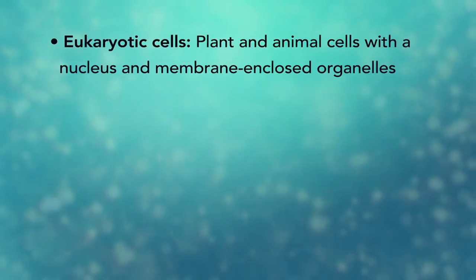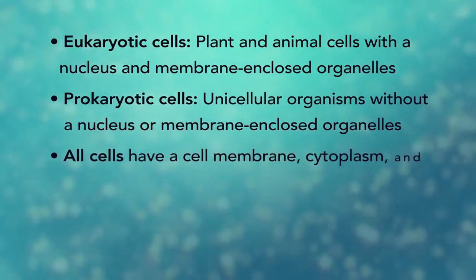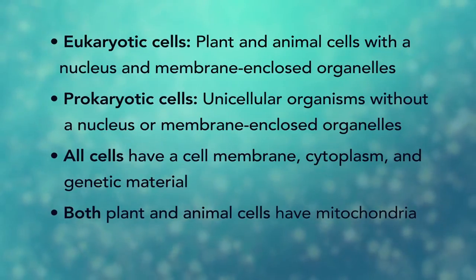In summary, remember, eukaryotic cells are plant and animal cells with a nucleus and membrane enclosed organelles, while prokaryotic cells are unicellular organisms without these things. All cells have a cell membrane, cytoplasm, and genetic material. And even though only plant cells have chloroplasts, both plant and animal cells have mitochondria.